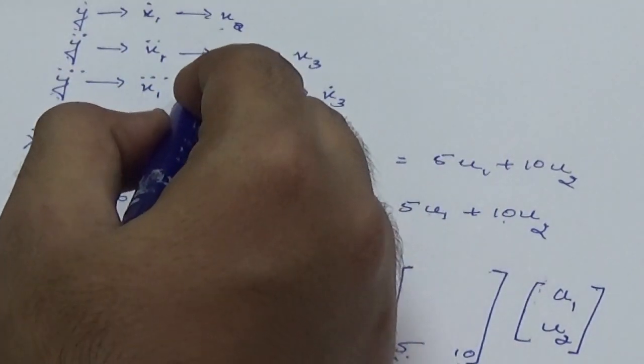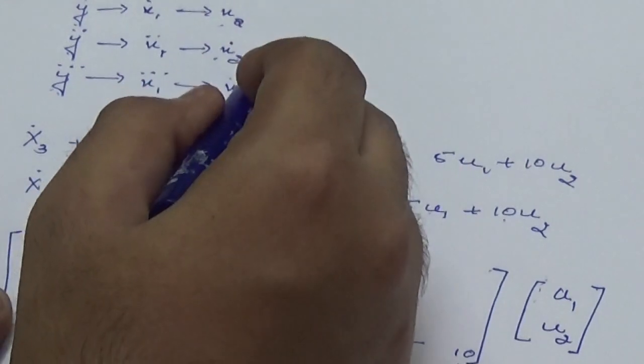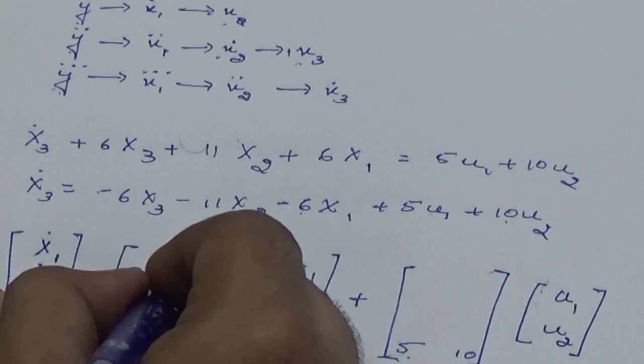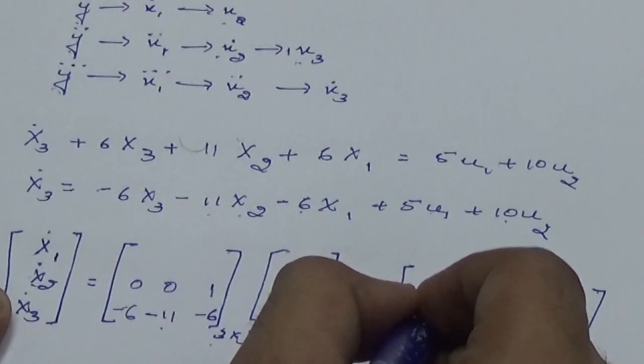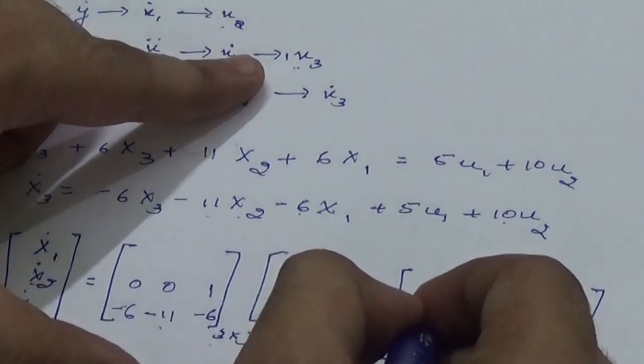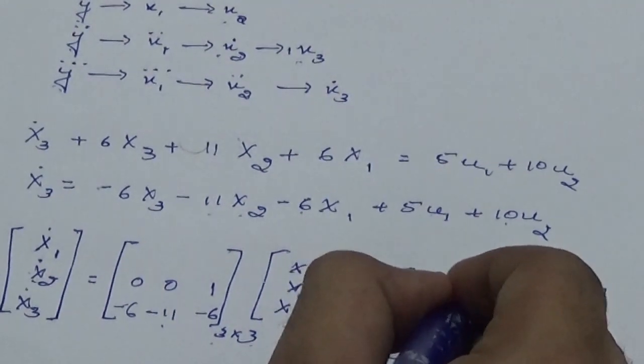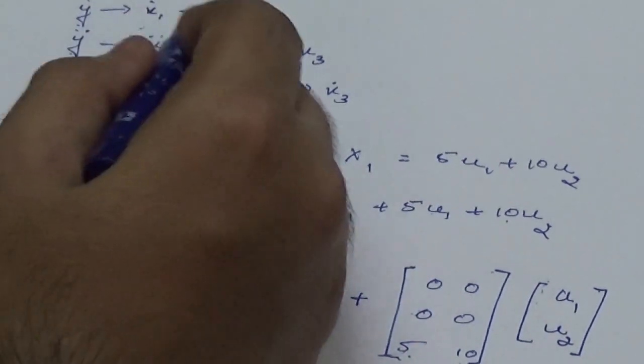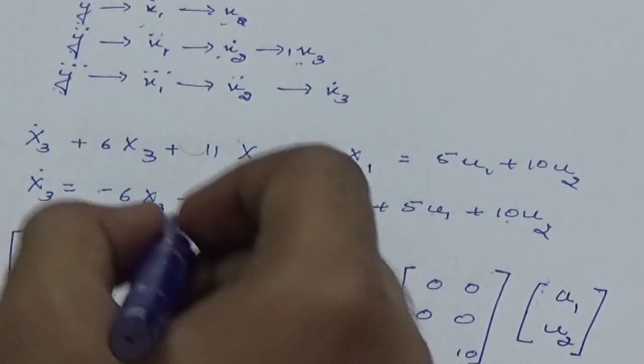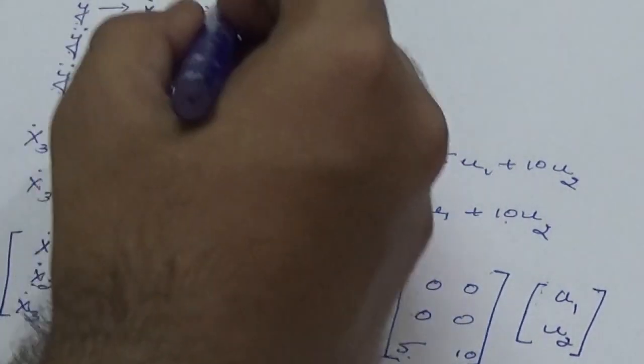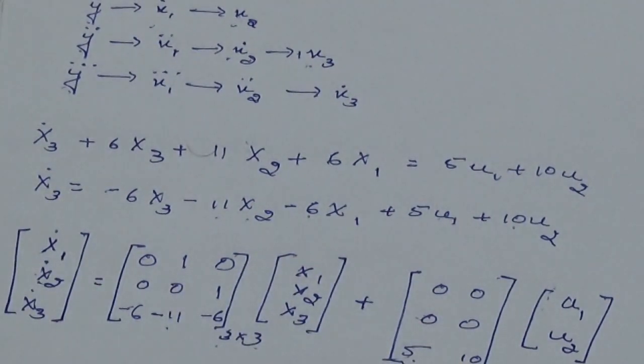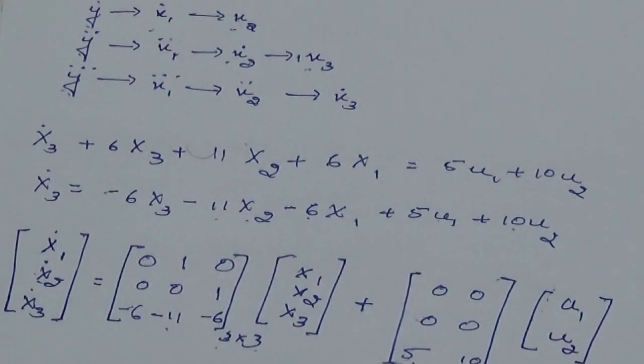Once I am done with this, I observe that x₂ dot, which is here, is related to x₃ with a coefficient 1, so therefore I write 1 here and 0s here. But since here it does not have any inputs, I write 0, 0, similarly here as well. Now I observe that x₁ dot is related to x₂, so I write 1 over here because it has coefficient 1. And this is how the state model equation is obtained for the given differential equation.